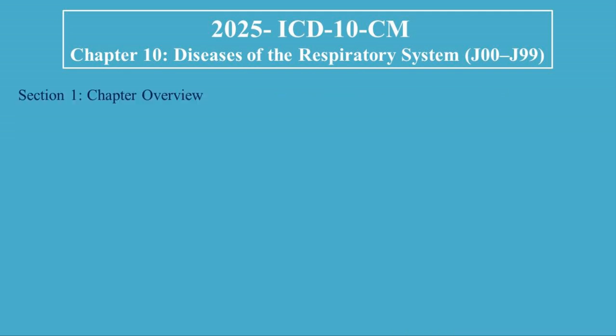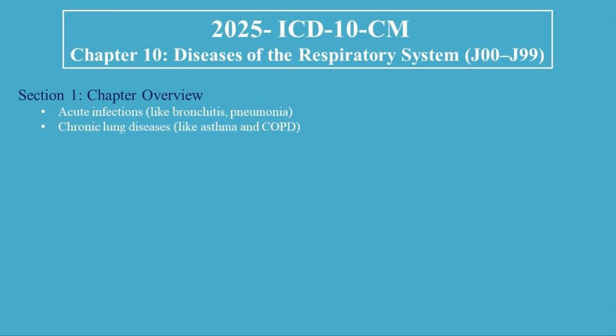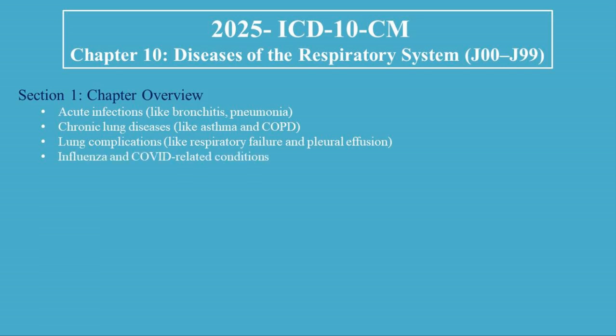Section 1: Chapter Overview. Chapter 10 covers conditions affecting the upper and lower respiratory tracts. It includes acute infections like bronchitis and pneumonia, chronic lung diseases like asthma and COPD, lung complications like respiratory failure and pleural effusion, and influenza and COVID-related conditions. Coding accurately in this chapter requires attention to infection type, causative agent, and chronicity or severity.